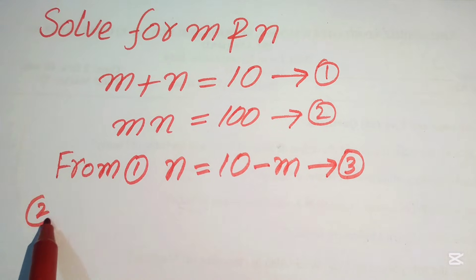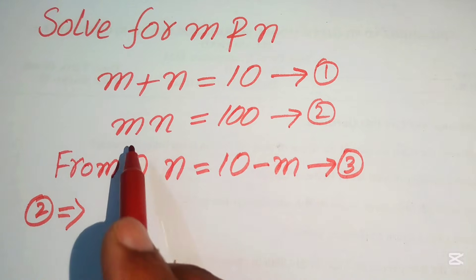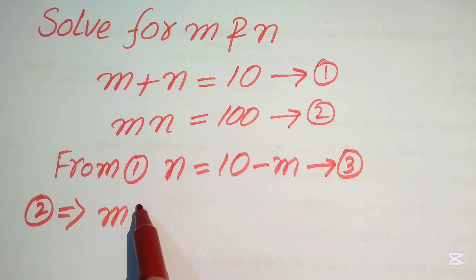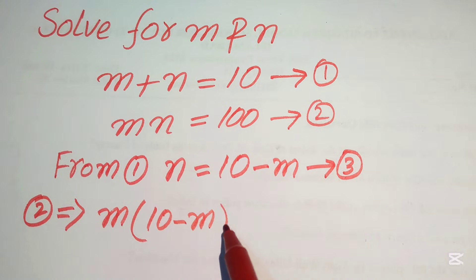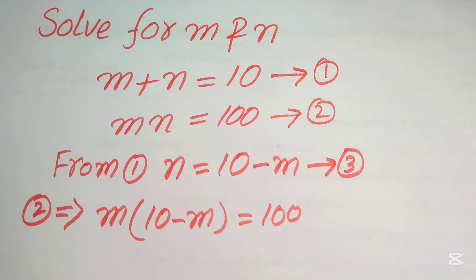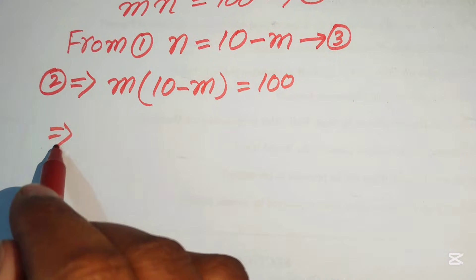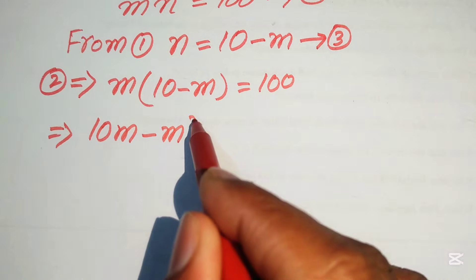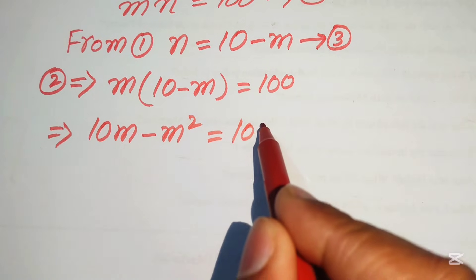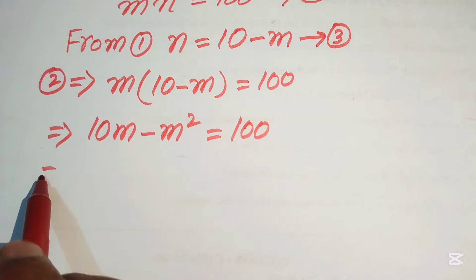Equation number two implies that m times n, and the value of n is 10 minus m, equals 100. We multiply m on both terms, so it becomes 10m minus m squared equals 100. This equation is now a quadratic in m, but not in standard form.